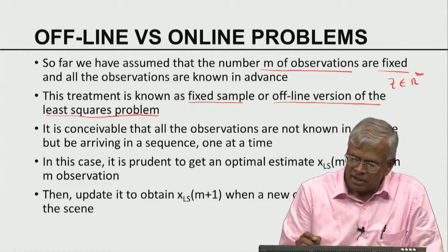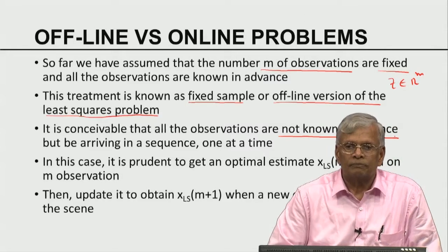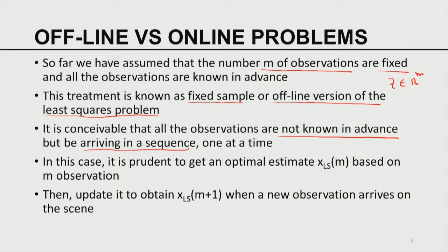It is conceivable that observations may not be known in advance — they may be arriving in a sequence one at a time, with a delay between each occurrence. In that case, it is prudent to ask: what is the optimal estimate X_LS based on M observations? I am now going to associate the number of measurements used in estimating the least square value of the unknown X. X_LS conditioned on M observations — when a new observation comes in, I would like to update X_LS to X_LS(M+1). This gives the flavor of what we mean by online as opposed to offline.